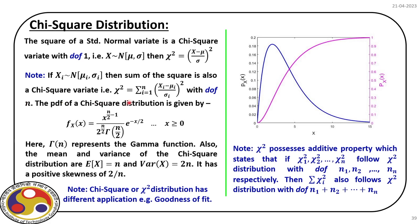The PDF for chi-square distribution contains the gamma function and has n (degrees of freedom) as a parameter. From this distribution, we can find the mean, which is n, and the variance, which is 2n. The chi-square distribution shown by the blue line on screen has a positive skew, and the skewness is 2/n.